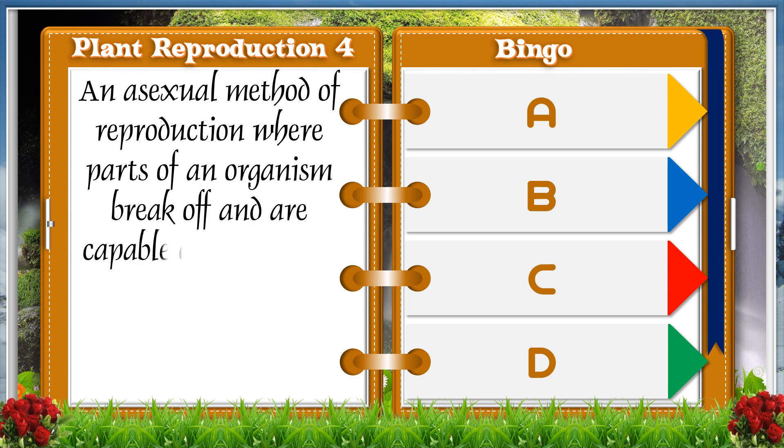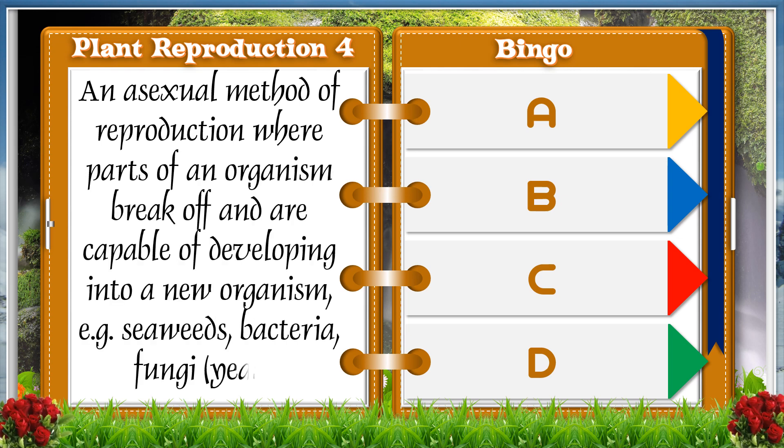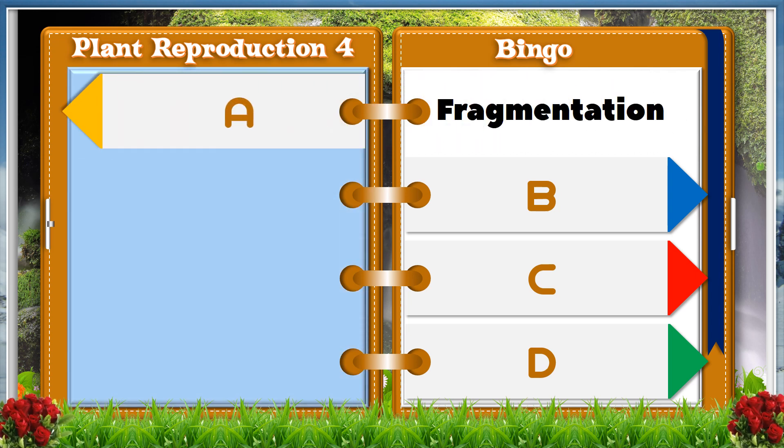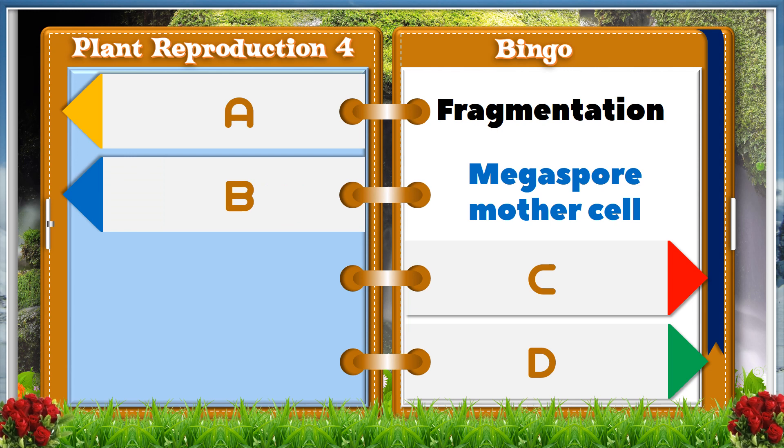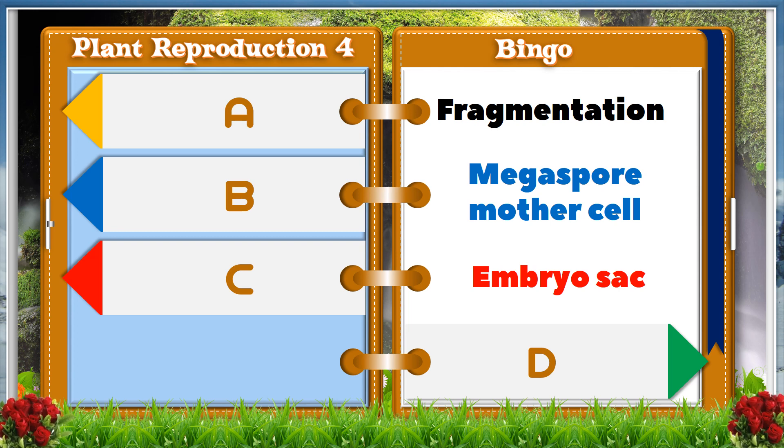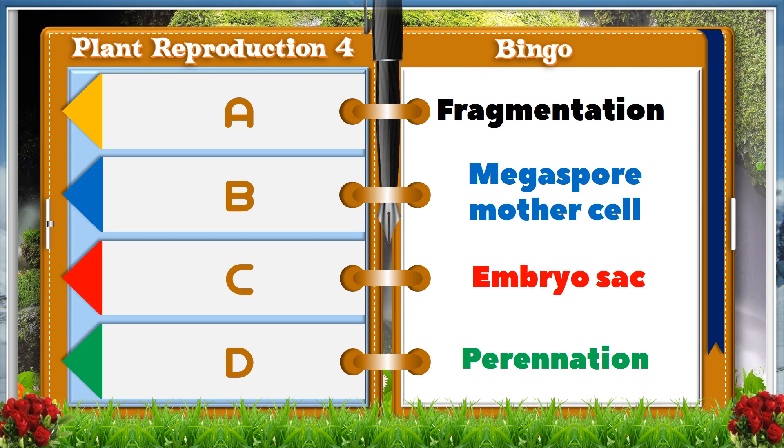An asexual method of reproduction where parts of an organism break off and are capable of developing into a new organism, for example, seaweeds, bacteria, fungi like yeast. A. Fragmentation. B. Megaspore mother cell. C. Embryo sac. D. Perennation. And the answer is A, Fragmentation.